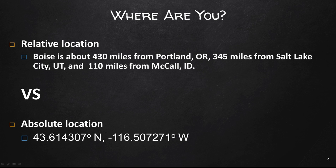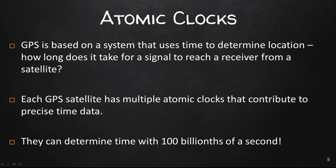GPS is based on a system that uses time to determine location — specifically, how long it takes for a signal to reach a receiver from a satellite. Each GPS satellite has multiple atomic clocks that contribute to very precise time data, and they can determine time to within one in 100 billion of a second. So they are very, very accurate.